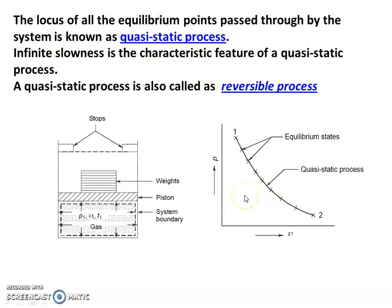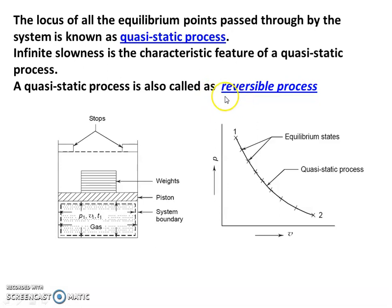Quasi means almost; static means not moving, stagnant. Infinite slowness is the characteristic feature of the quasi-static process. A quasi-static process is also called a reversible process. This is important: practically, no process is a quasi-static process, and no process is a reversible process.